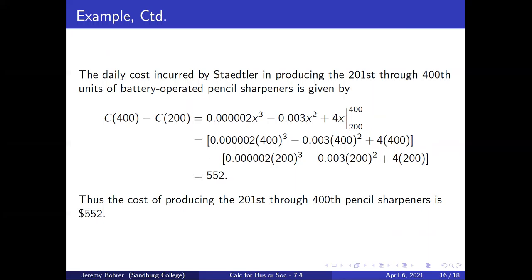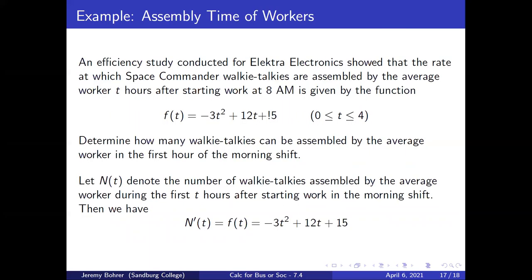The daily cost for producing the 201st through 400th units is given by C(400) − C(200), which equals [0.0000002x³ − 0.003x² + 4x] evaluated between 200 and 400, using the antiderivative already found. That equals $552. So the cost of producing the 201st through 400th pencil sharpeners is $552.